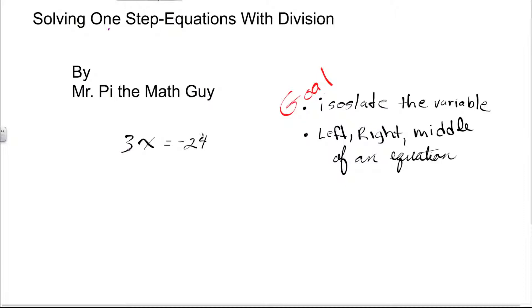That's because when solving equations, we have to use properties of equalities, which we're going to learn about, to keep the balance. You're going to see that here in upcoming examples, but for this example, all I want you to understand is that the equal sign is the middle of the equation.